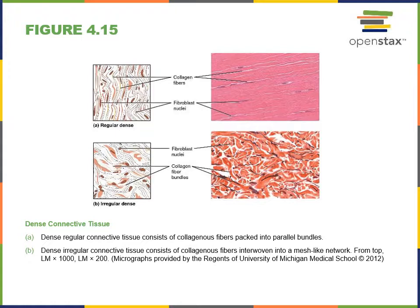The distinctive feature of dense regular connective tissue is that all the bundles of collagen fibers are parallel, whereas dense irregular connective tissue has collagen fibers that are randomly arranged, with bundles running in a variety of different directions in order to resist multiple directions of stress. Dense irregular connective tissue is found in the reticular layer of the dermis, in joint capsules surrounding joints, and in fibrous capsules surrounding organs.